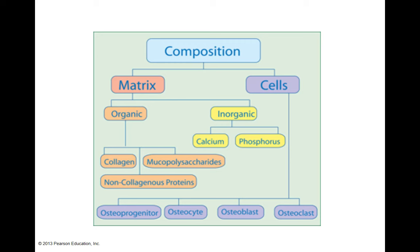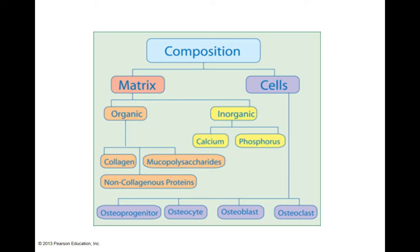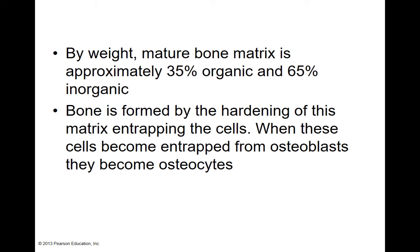The majority of bone is the inorganic component. Bone is formed by the hardening of the matrix. Osteoblasts lay down the organic tissue and help lay down some of the inorganic tissue. Once osteoblasts build the tissue, they get stuck in it — they secrete all this matrix around themselves and then become completely entrapped by the new matrix. Once trapped, they can no longer lay down more bone matrix, and they become an osteocyte.